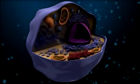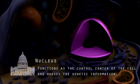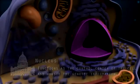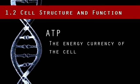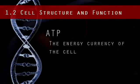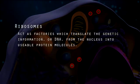The nucleus is like the capital building of the city because it functions as the control center of the cell and houses the genetic information, or instructions, for what the cell is supposed to do. The mitochondria functions as the powerhouse of the cell by producing the energy the cell needs to perform its duties. This is just like a power plant providing energy for a city to use. The energy currency of the cell is ATP. The ribosomes act as factories which translate the genetic information, or DNA, from the nucleus into usable protein molecules. Proteins do the work in the cell.